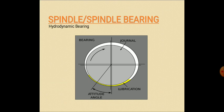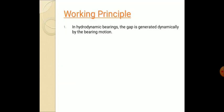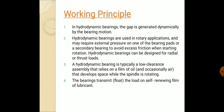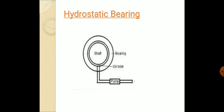Hydrodynamic bearing can be designed for radial or thrust load. A hydrodynamic bearing is typically a low clearance assembly that relies on the film of oil which develops the pressure on the journal when the bearing starts rotating. This lubrication oil develops the high pressure on the journal which makes the journal rotate. The bearing transmit the load on self-renewing film of the lubricant. This is the working principle of hydrodynamic bearing.